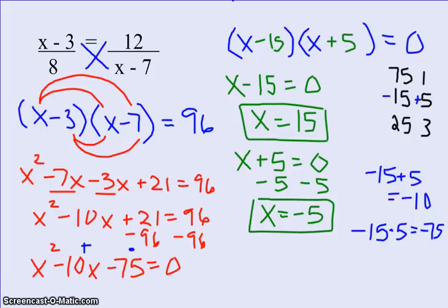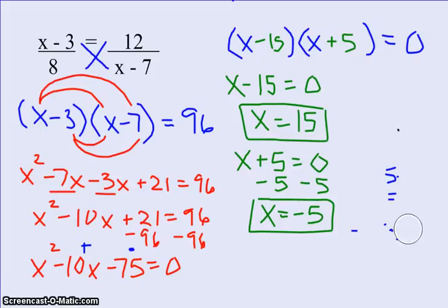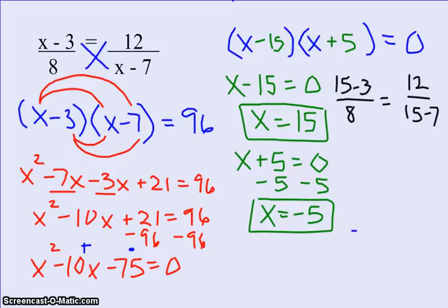We can confirm that by plugging it in back at the beginning. If you didn't have that written down yet, just pause your video and rewind. So let's see, if x is 15, we'd have 15 minus 3 over 8 equals 12 over 15 minus 7. Well, 15 minus 3 is 12, so we have 12 over 8.